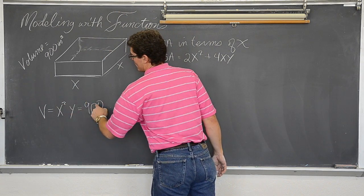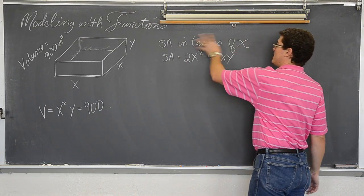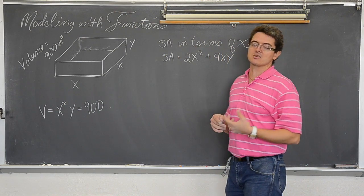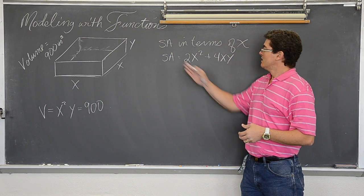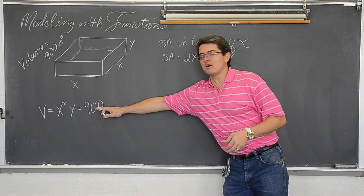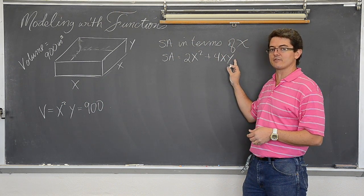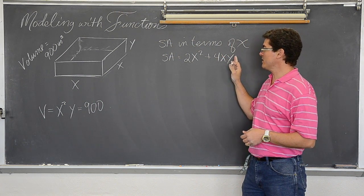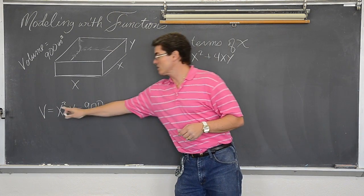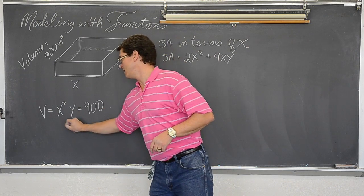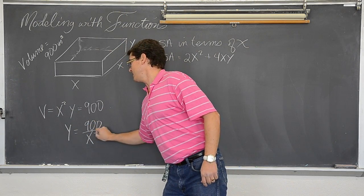So for this rectangular solid we have a fixed volume that we must meet. But the surface area, the shape of the box is fluid. I just want to make sure it holds 900 cubic units. I can use that fixed volume formula to help me get rid of y in my surface area formula. If I want to get rid of y, I want this equation solved for y which will just have x's on the other side. So this is going to be y is equal to 900 divided by x².